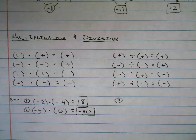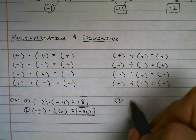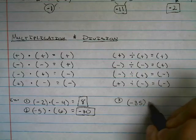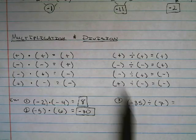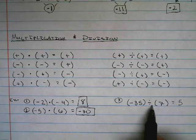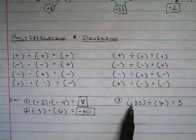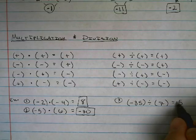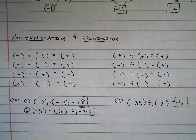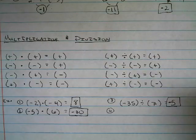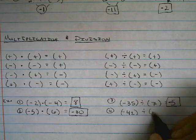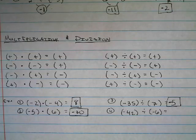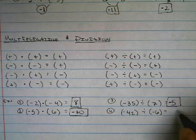Same rules apply for division. Let's try negative 35 divided by positive 7. 35 divided by 7 is 5, and a negative divided by a positive is a negative, so the answer is negative 5. What if I did negative 42 divided by negative 6? 42 divided by 6 is 7, and a negative divided by a negative is a positive, so the answer is positive 7.